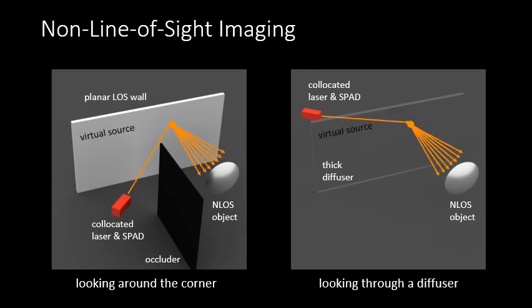In both of these cases, the light source illuminates a point on the visible surface, wall or diffuser, and this point scatters light in all directions towards the non-line-of-sight scene, acting as a virtual source.